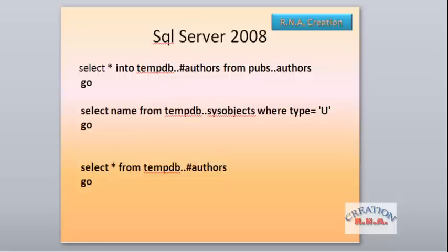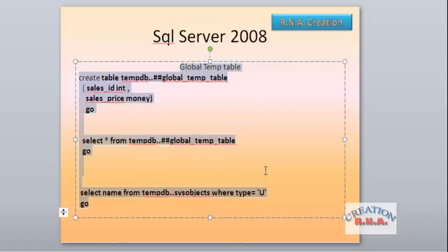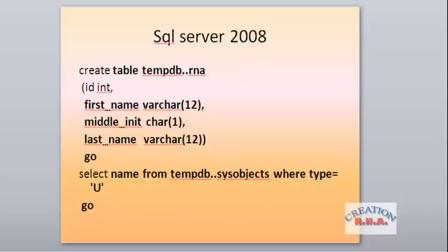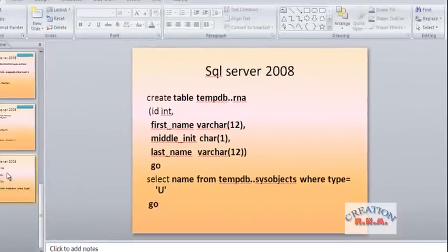Now let's examine the global temp table SQL. You can see that the table is created using a double hash — that's the only difference between a local and a global temp table when creating it: a single hash versus a double hash. Moving to the next slide, this shows how to create a permanent tempdb table — you create it just like any other normal table, with no hash prefix. Now we will go and execute this SQL in SQL Server itself.